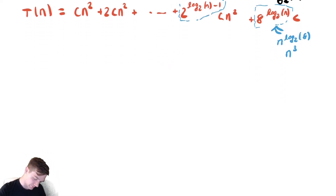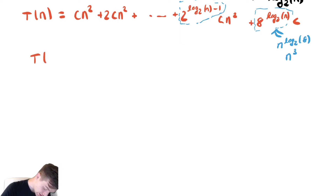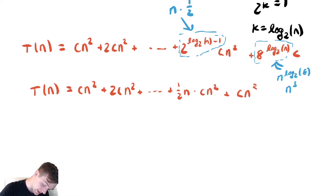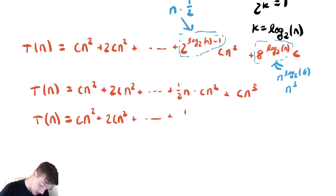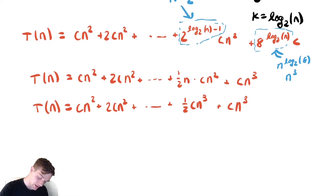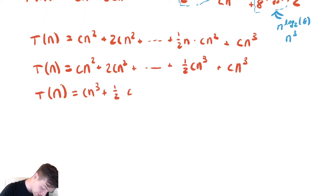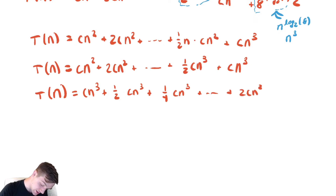With all of that in mind, T(n) equals cn squared plus 2cn squared plus ... plus (1/2)n times cn squared, plus cn cubed. Reversing the order for geometric analysis: cn cubed plus (1/2)cn cubed plus (1/4)cn cubed and so on, all the way down to 2cn squared plus cn squared.